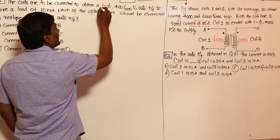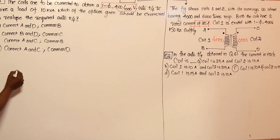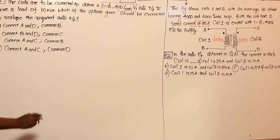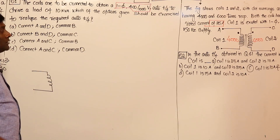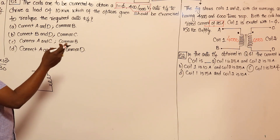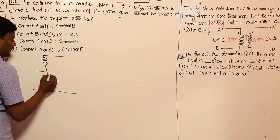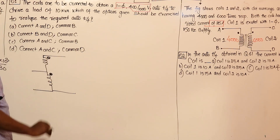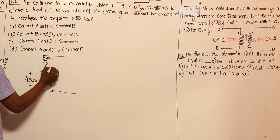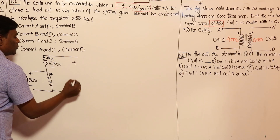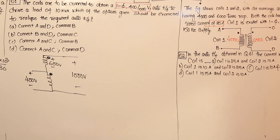The coils are to be connected to obtain a single-phase 400 by 1000 volt auto transformer. Drawing the connection diagram, we need to determine if it should be additive or subtractive. It must be additive, because the output voltage is 1000 volts: if 400 volts is supplied across coil 1, the second coil contributes 600 volts, giving 400 plus 600 equals 1000 volts output.